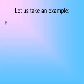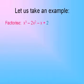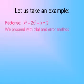Let us take an example: x cubed minus 2x squared minus x plus 2. We factorize this expression. Here we proceed with trial and error method. First we substitute 1 in place of x.